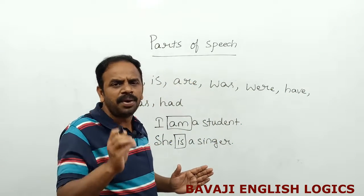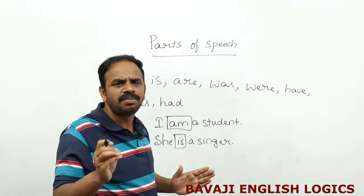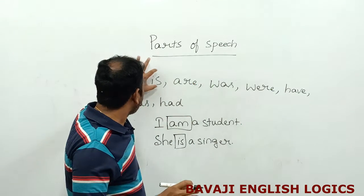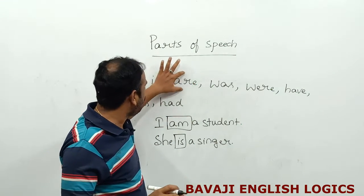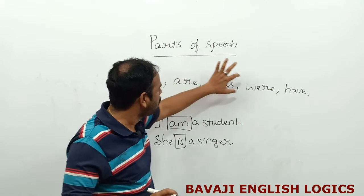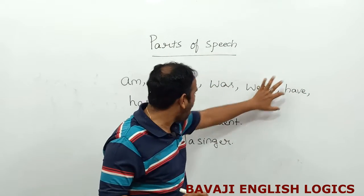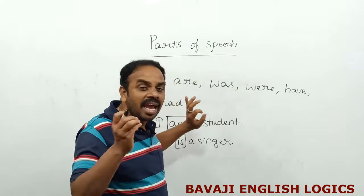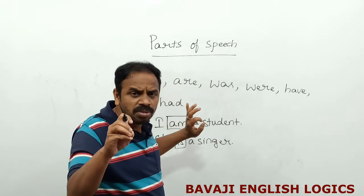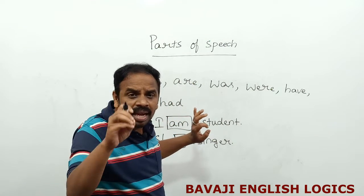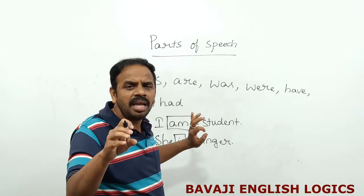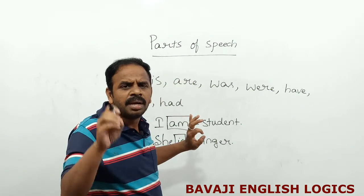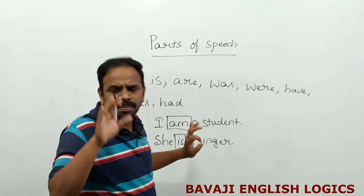Am, is, are, was, were, have, has, and had can be used independently even without a main verb.